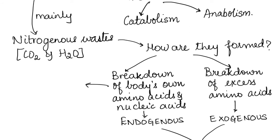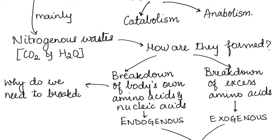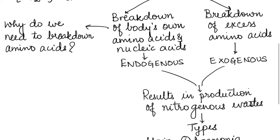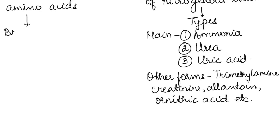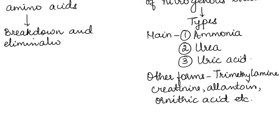Now, why do we need to break down the amino acids? We know that amino acids are the building blocks for proteins, so here we are talking of breaking down the excess of amino acids. The body can store carbohydrates and fats — glucose is converted to glycogen and stored, and excess fats are also stored in our body. But it is not possible to store amino acids, hence the excess of amino acids has to be broken down and eliminated.